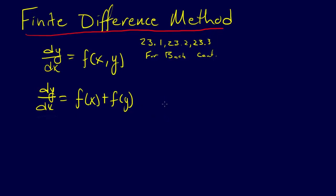What we have is the finite differences from tables 23.1, 23.2, and 23.3 in the book. These are the forward, backwards, and centered divided difference methods. Let's say we're going to use dy/dx equals, let's use the forward difference.